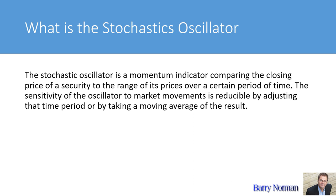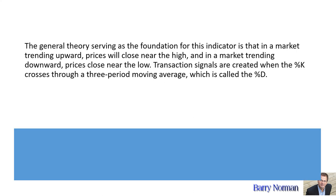The move between the high and the low is critically important, because it tells us that the bulls or the bears at some point were able to muster a lot of strength. The general theory serving as the foundation for this indicator is that in a market trending upward, prices will close near the high, and in a market trending downward, prices will close near the low. Transaction signals are created when the percent K line crosses the three-period moving average, which we call the D line.